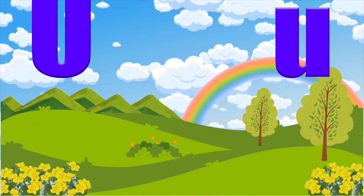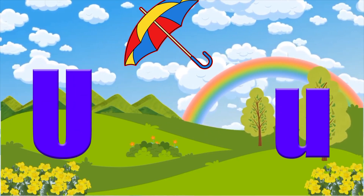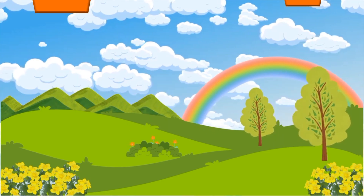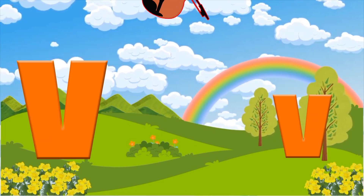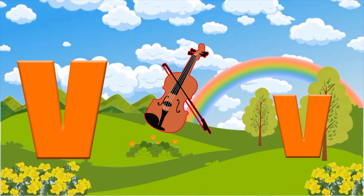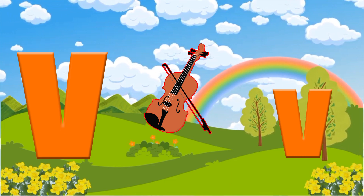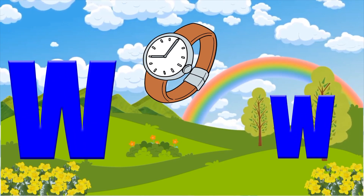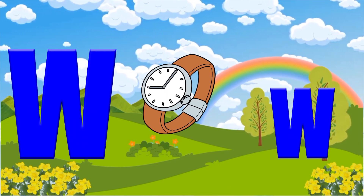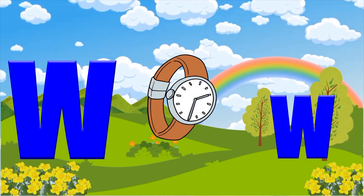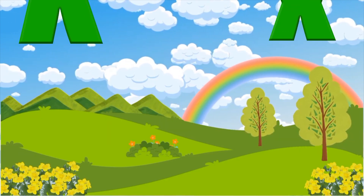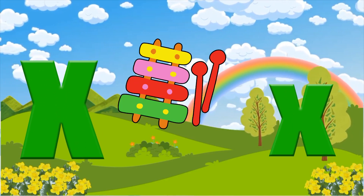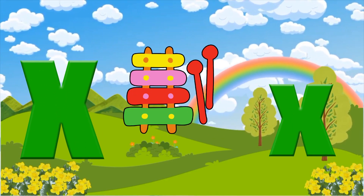U is for umbrella, u-u-umbrella. V is for violin, v-v-violin. W is for watch, w-w-watch. X is for xylophone, z-z-xylophone.